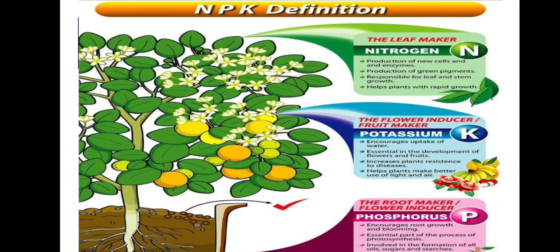A simple way to remember NPK: nitrogen is known as the 'leaf maker' — it produces new cells and enzymes, produces green pigment chlorophyll, and is responsible for leaf and stem growth, helping plants with rapid vegetative growth. Potassium is known as the 'flavor inducer' or 'food maker' — it encourages water uptake, is essential in the development of flowers and fruits, increases plant resistance to diseases, and helps plants make better use of light.